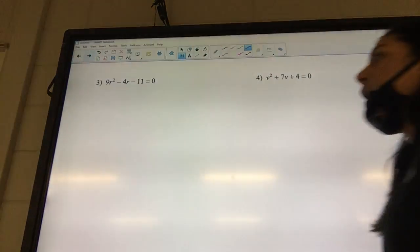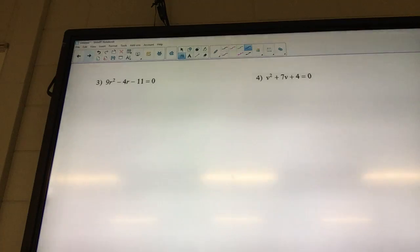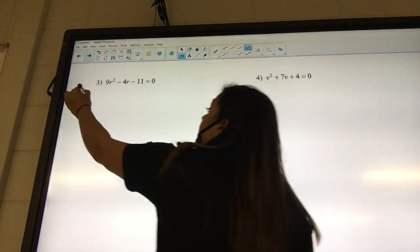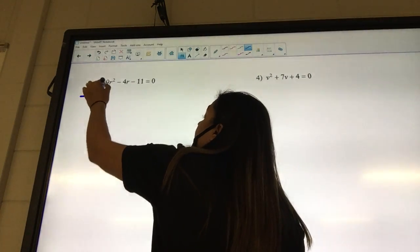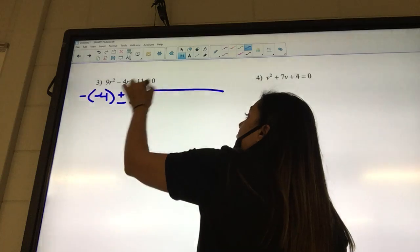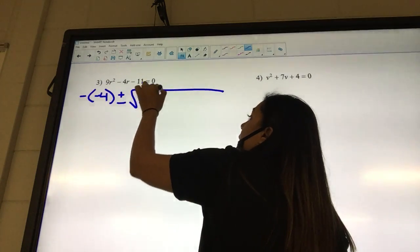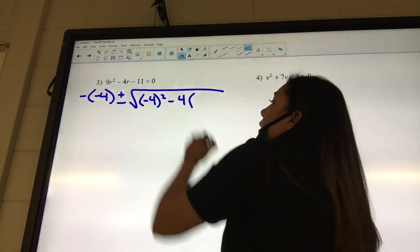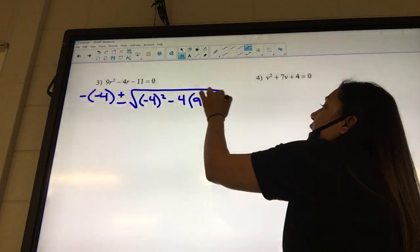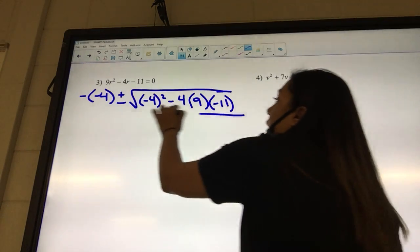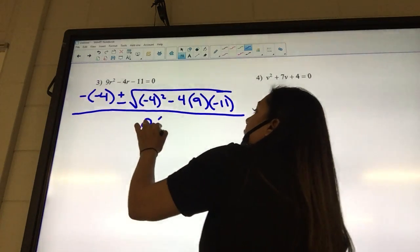Okay, look at 9. What is our A? 9. B? Negative 4. C? Negative 11. Good. So we got negative B plus or minus the square root of B squared minus 4 times our A which is 9, times our C which is negative 11, all over 2 times our A.